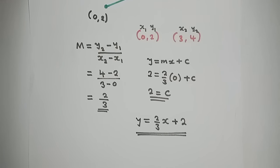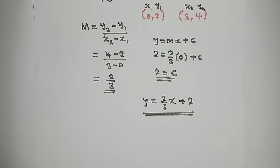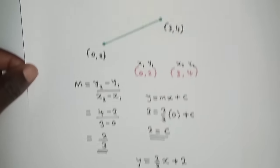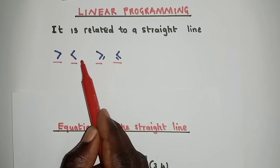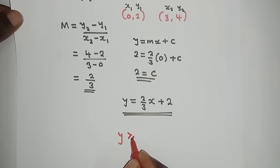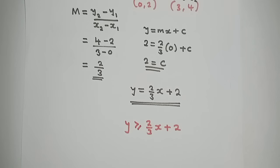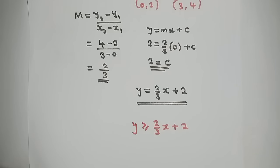On this same equation of a straight line, if this were an inequality, I would need to write either greater than, less than, greater than or equal to, or less than or equal to instead of the equals sign. For example, y is greater than or equal to (2/3)x + 2. That is how inequalities and straight lines are similar — the only difference is the sign used.